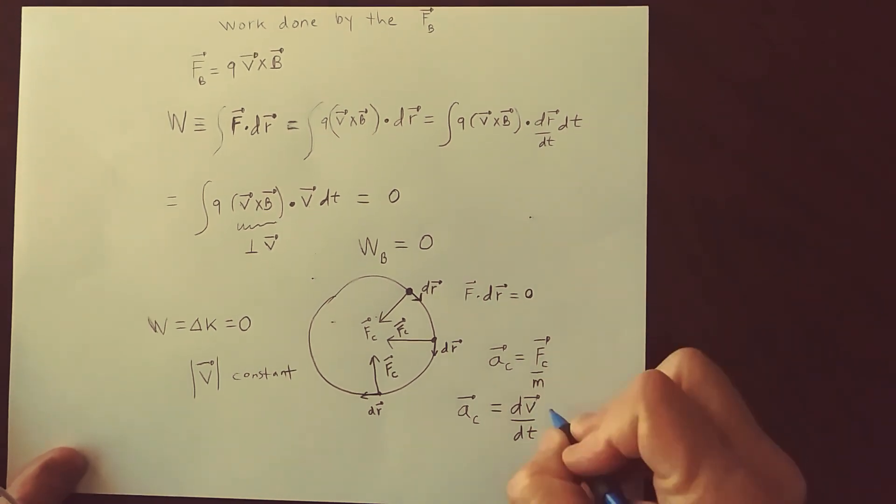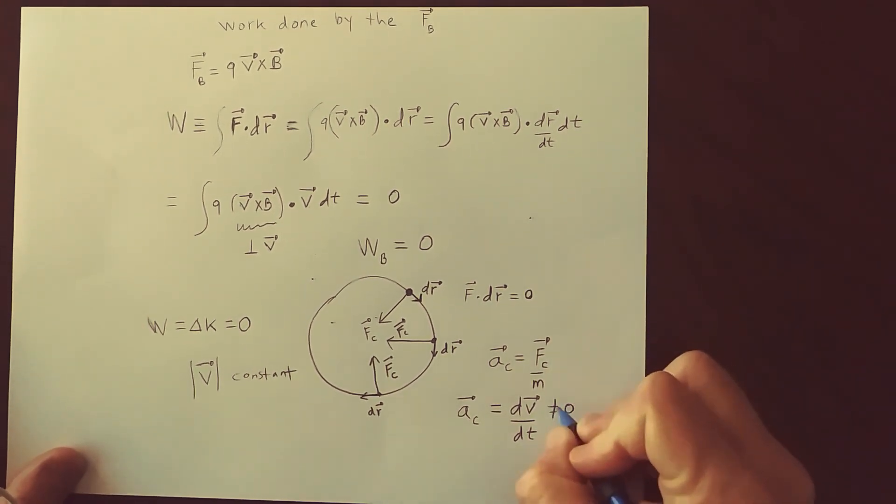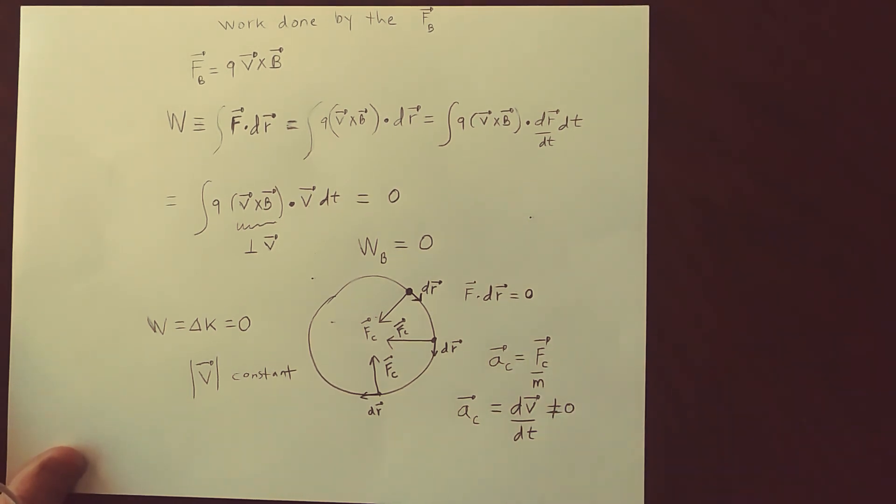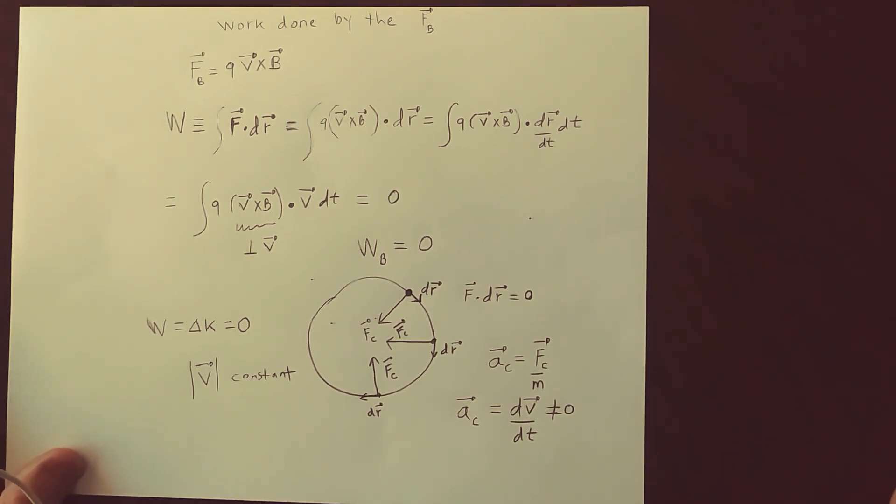All right, so this is not equal to zero in circular motion. Yet the speed is unchanged, so what's changing in the velocity? Well, it must be the direction.